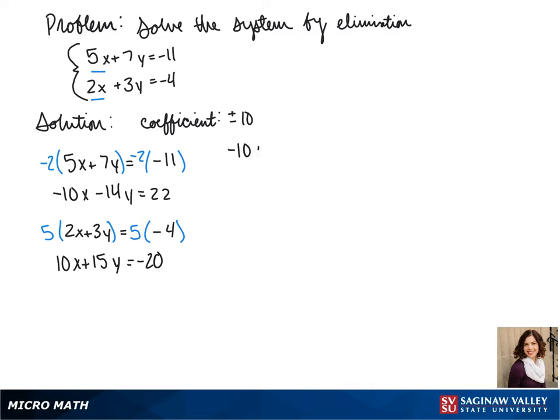Now we can combine our equations. Negative 10x minus 14y equals 22, and 10x plus 15y equals negative 20. Our x's cancel. Our y's give us y equals 2.